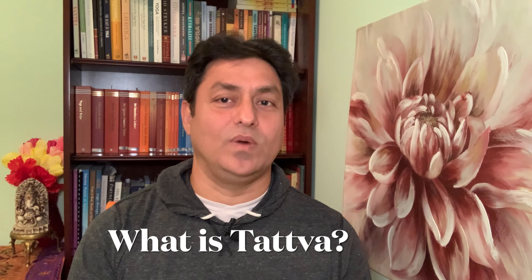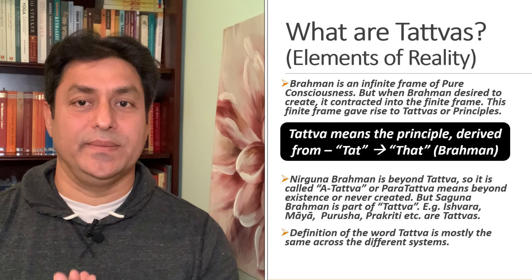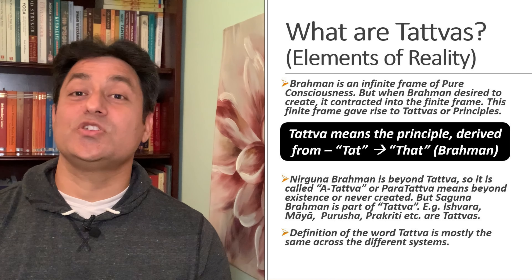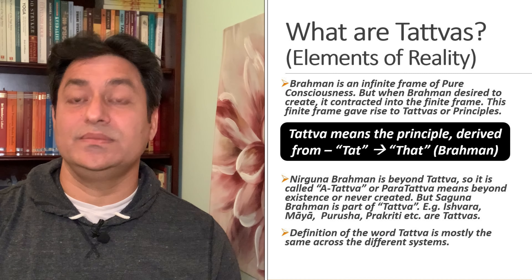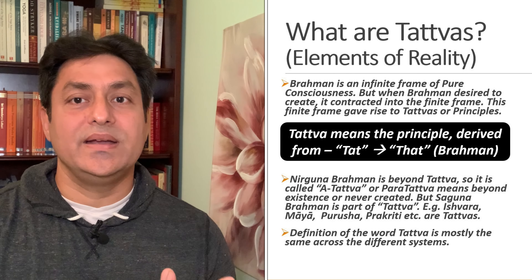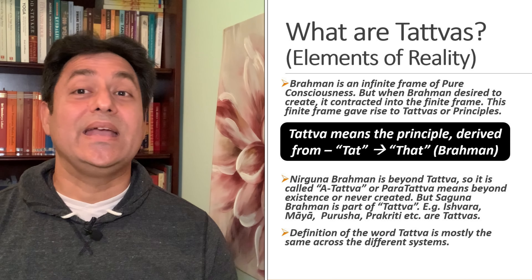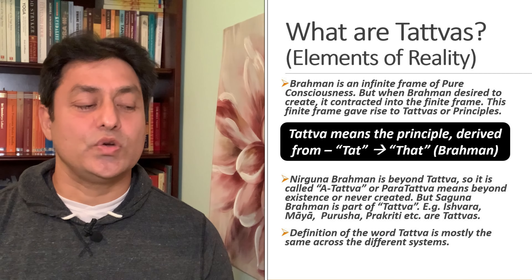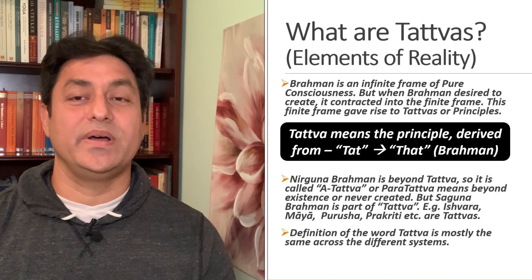Now let's understand the word Tattwa. Tattwa means the principle derived from 'Tat,' which means 'that' or Brahman. So it is a term used to refer to the principles or elements that come into play during the process of creation, or when the Absolute Supreme Brahman starts to divide and manifest itself in multiple. Since Brahman is an infinite frame of pure consciousness, when Brahman desired to create, it contracted into a finite frame. This finite frame gave rise to Tattwa or principles.